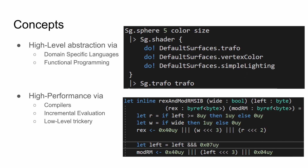In retrospective, what are the main aspects or concepts we used in this engine? The first one is very high-level abstraction via functional programming and domain-specific languages. But in order to make this usable with big data, we need high performance. We achieve this by having compilers for various scenarios, compiling domain-specific languages mostly to GPU code, using incremental evaluation, and low-level trickery to utilize the GPU as best as possible.